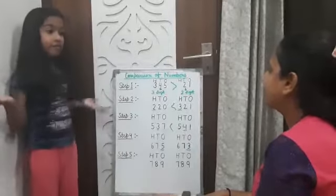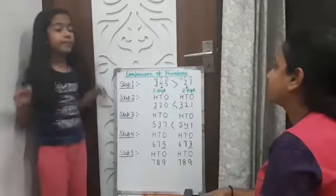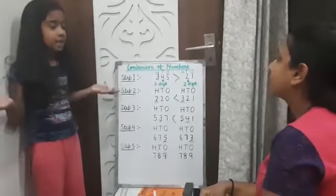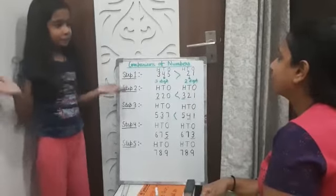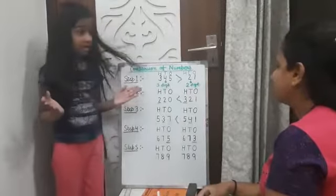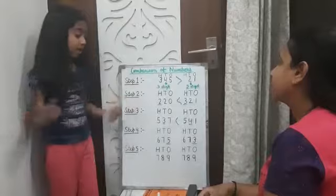Step four: If hundreds and tens are same, check the ones place. Bigger ones digit means bigger number.